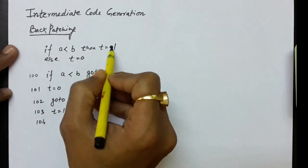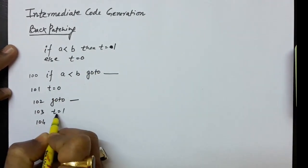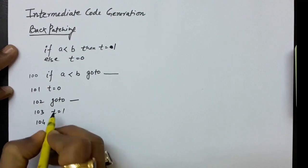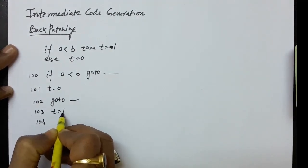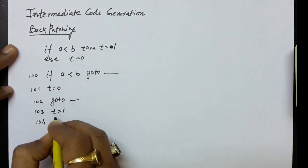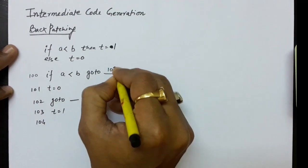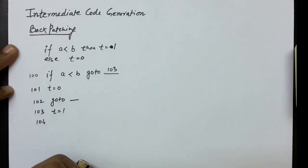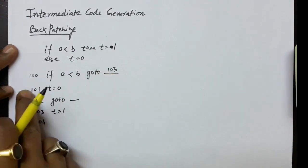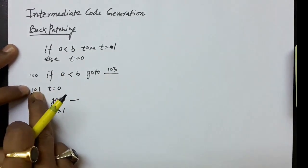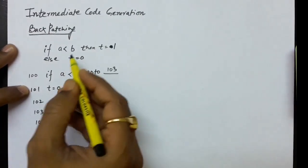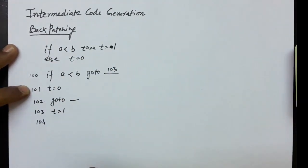If the condition is true, t must be 1, which is written at label 103. After setting t equals 1 we must exit the if construct, so immediately after that statement we switch to label 104. If the condition is false, we do not go to 103; instead we fall through to label 101 where t equals 0. After setting t equals 0 we must also exit the construct and come to label 104.